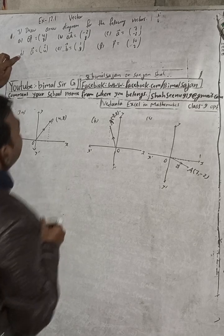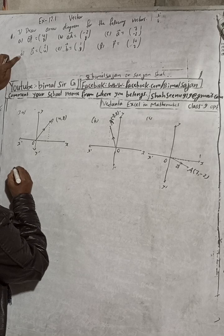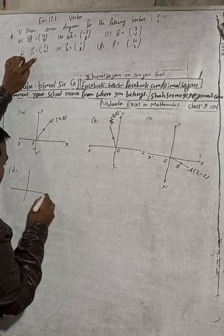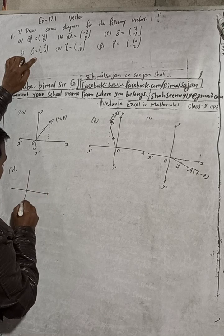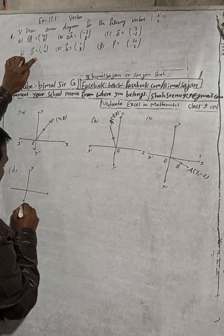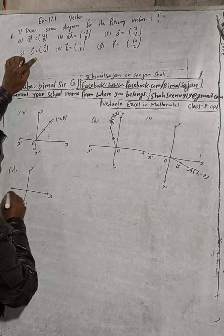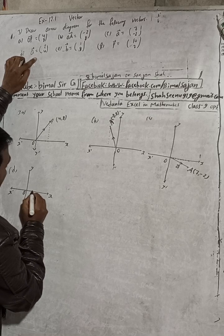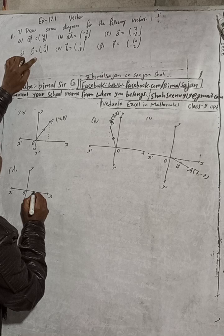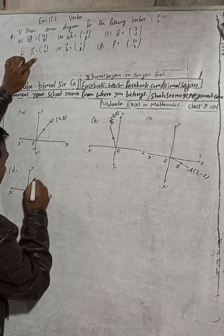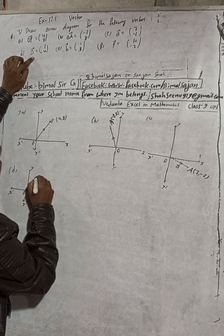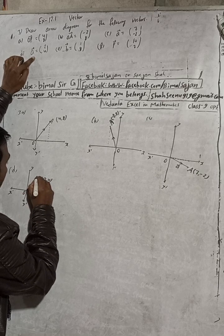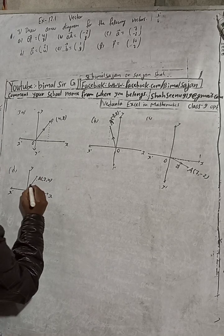Now part (d): the vector is two comma four, so it is in the first quadrant. This is our x and y axes and origin. Two comma four means go two to the right side, and plus four means one, two, three, four upward. This is our point capital A at two comma four, and from the origin to this point is small 'a' vector.